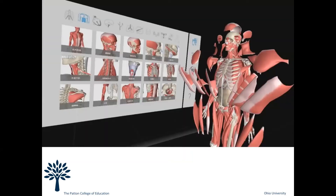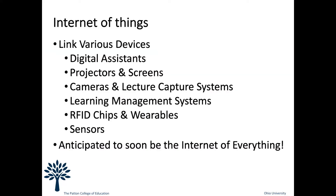From a slightly different perspective, there are also experiences where instead of immersing yourself in an environment, you can take a physical object and dissect it into its components — like the human body for teaching anatomy. This happens to be an app used for teaching anatomy in Chinese. The last thing I'll be talking about is the Internet of Things, where the Internet will be treated like the electrical grid today. We can link a variety of devices including digital assistants, projectors, cameras, learning management systems, RFID chips, wearables, and sensors.